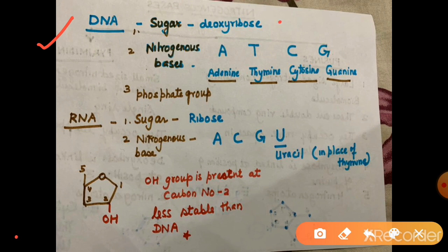In DNA, the sugar is deoxyribose and nitrogenous bases are A, T, G, C — adenine, thymine, guanine, and cytosine — plus a phosphate group. In RNA, the sugar is ribose, not deoxyribose. At the 2' carbon position of the 5-carbon ring sugar, DNA has only hydrogen whereas RNA has an OH group. That is why DNA is called 'deoxy' — one oxygen less. In RNA, the number 2 position carbon has an OH group. The nitrogenous bases in RNA are A, C, G, and U.